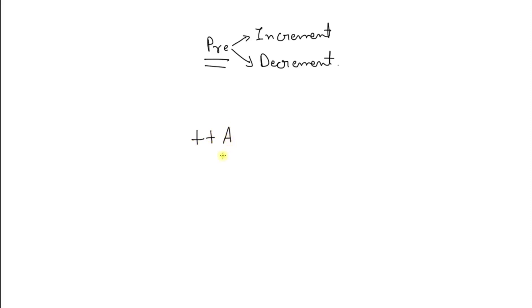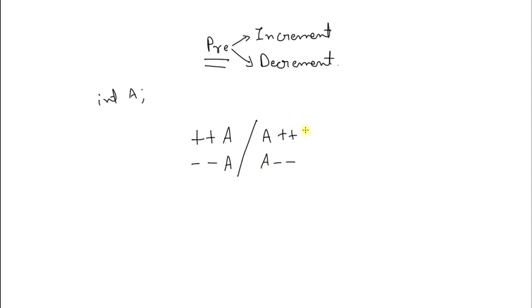This is pre-increment and this is pre-decrement, where 'a' is some integer variable. Whenever you write pre-increment or pre-decrement, or post-increment and post-decrement — this is post-increment and post-decrement, which we are not talking about right now, that is explained in the next video. It is called 'pre' because the plus-plus comes before 'a', and 'post' because the plus-plus comes after 'a'.